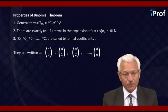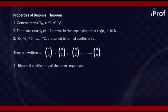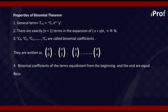Binomial coefficients of the terms equidistant from the beginning and the end are equal. It is because NCR equals NC(N-R). First term NC0 equals the last term NCN. The second term NC1 is equal to the last but one term, that is NC(N-1).